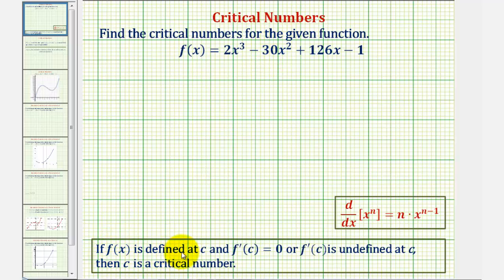If f(x) is defined at c, and f'(c) equals zero, or f'(c) is undefined at c, then c is a critical number.